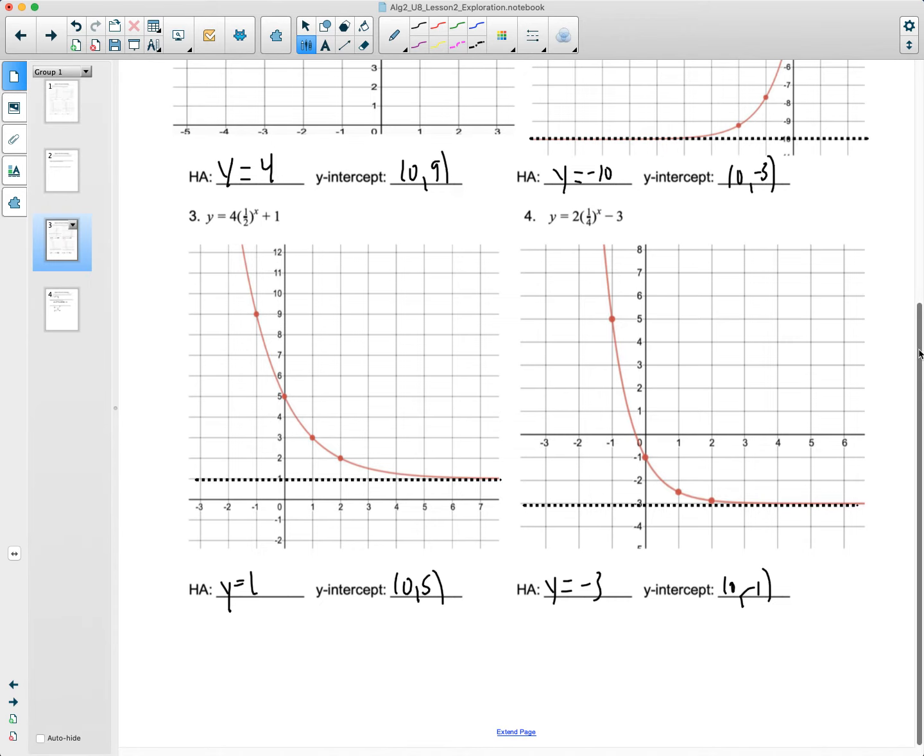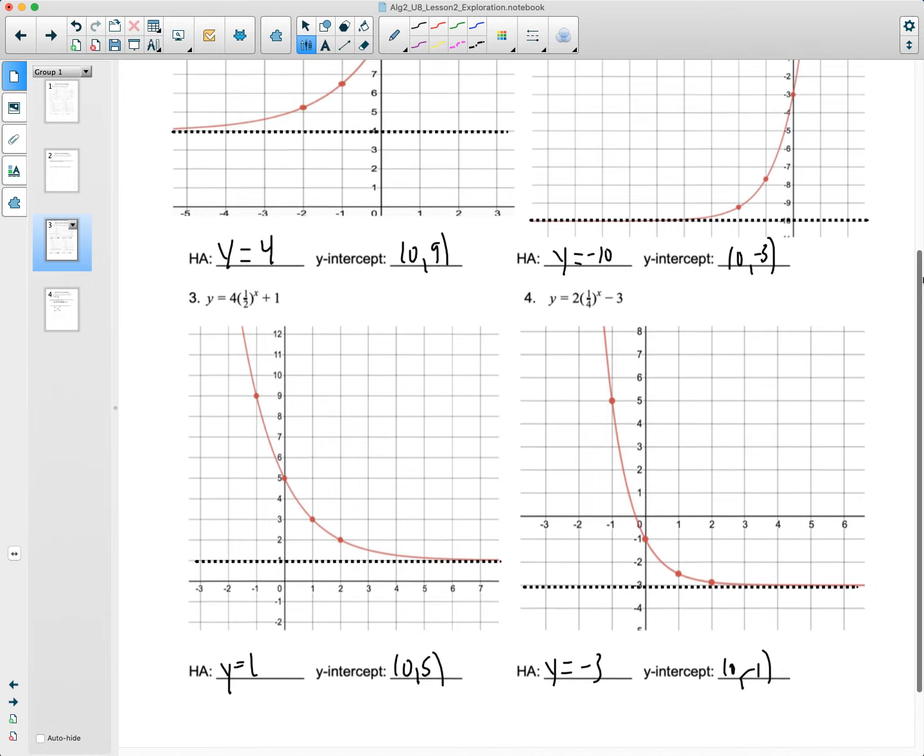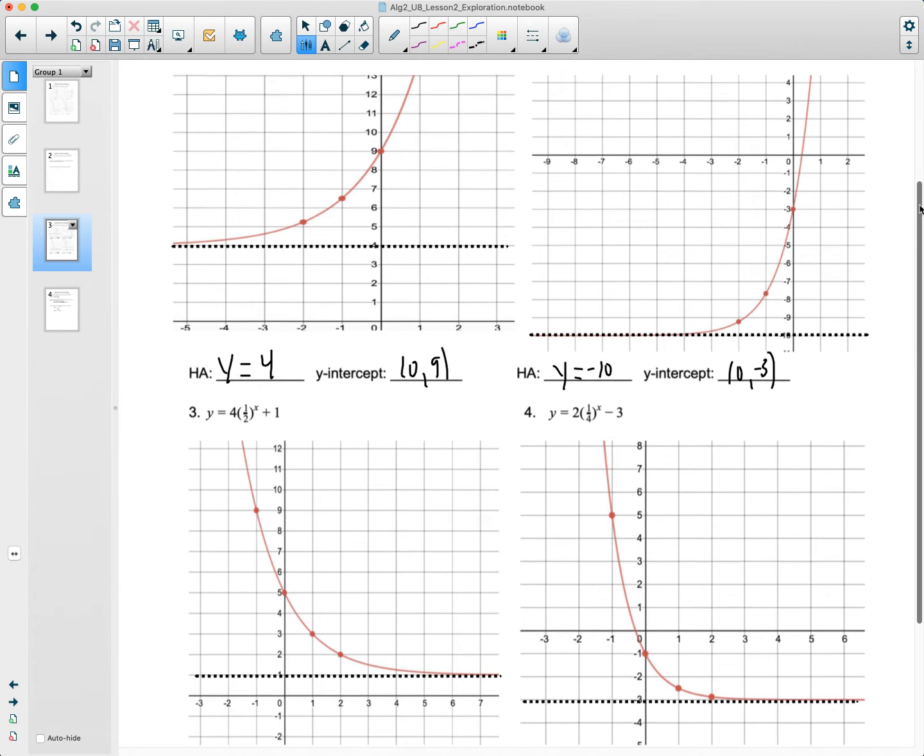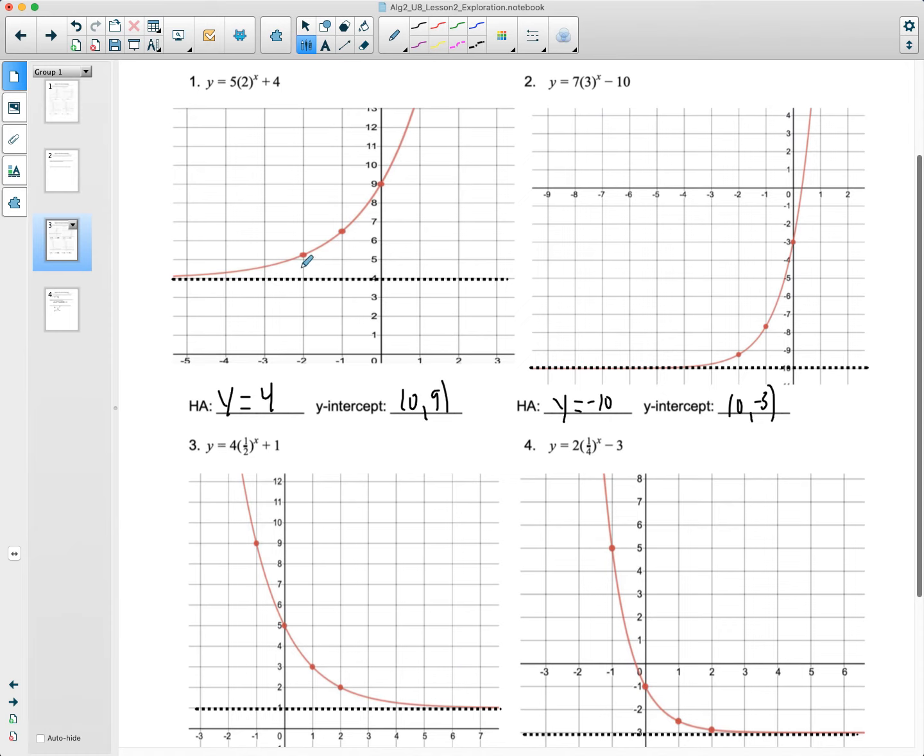Now the second thing that we wanted you to kind of notice is what effect does the a value have on our graph, right? And so when I look, here's y equals 4, my y-intercept is (0, 9), alright, and the difference between 4 and 9 is a 5 right there, right? Y equals negative 10 is my horizontal asymptote. If I go up to my y-intercept, that's (0, 3), it's the same as that a value right there. So that a value, remember, when we talked about our relationships with our mother functions, alright, it's a multiplier for our y-values in our range for a given function. You see this here, right? So there's 1, my y-intercept is 5, it differs by 4, alright? So that was really some of the big things that we wanted you to pick up on.